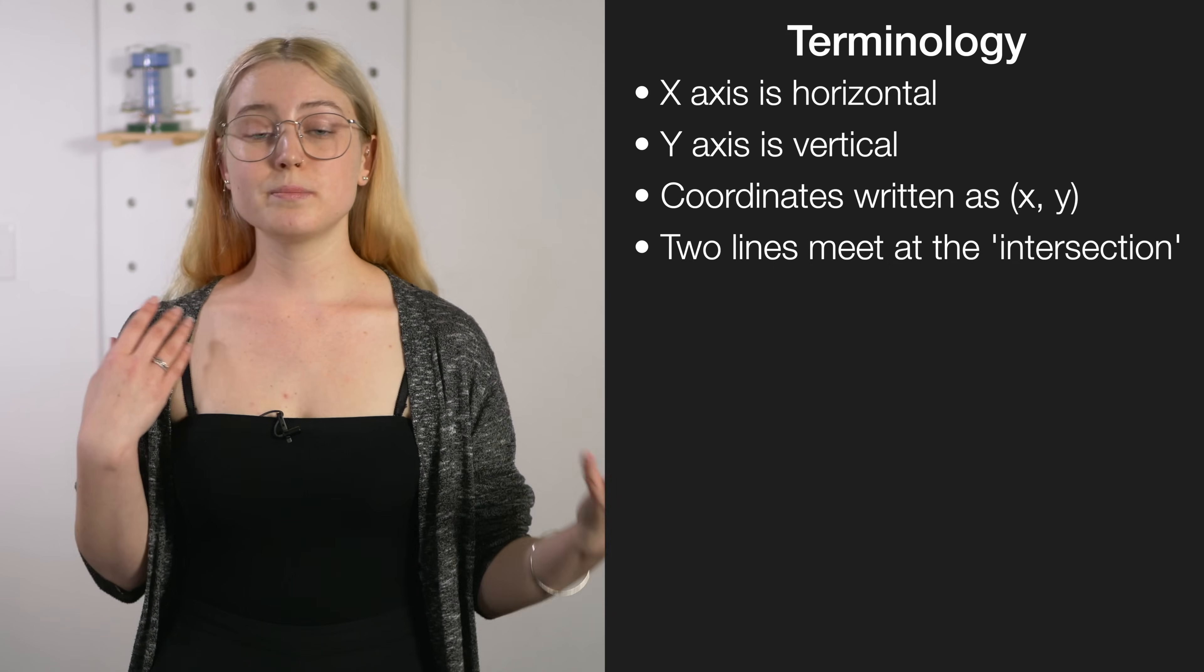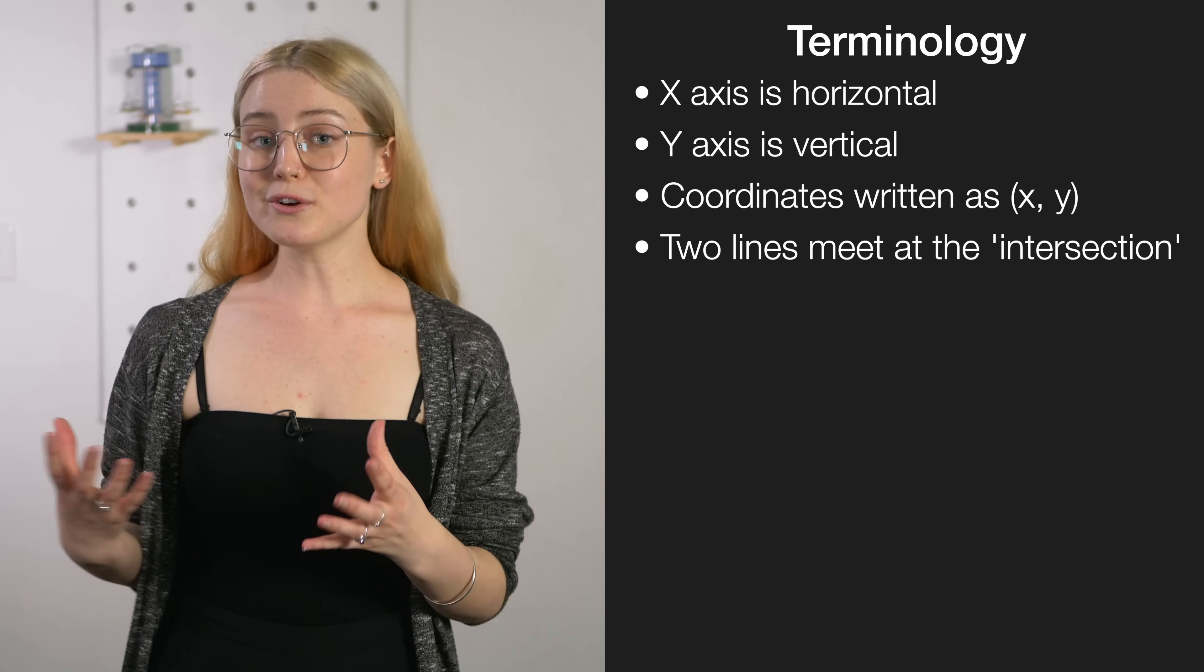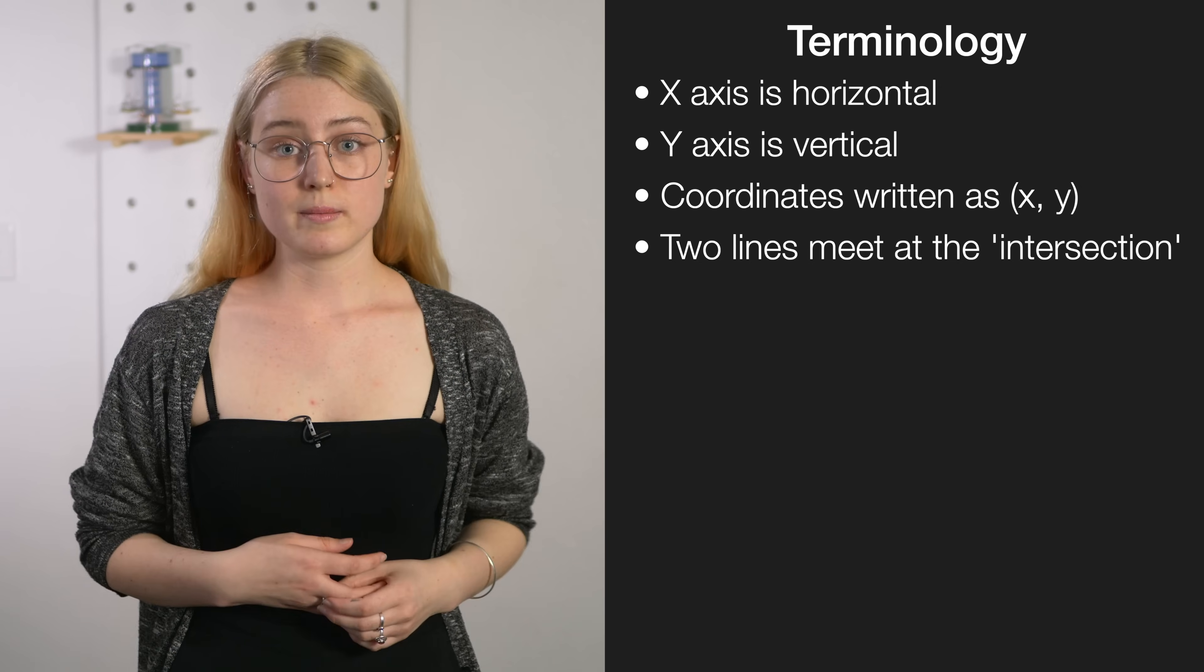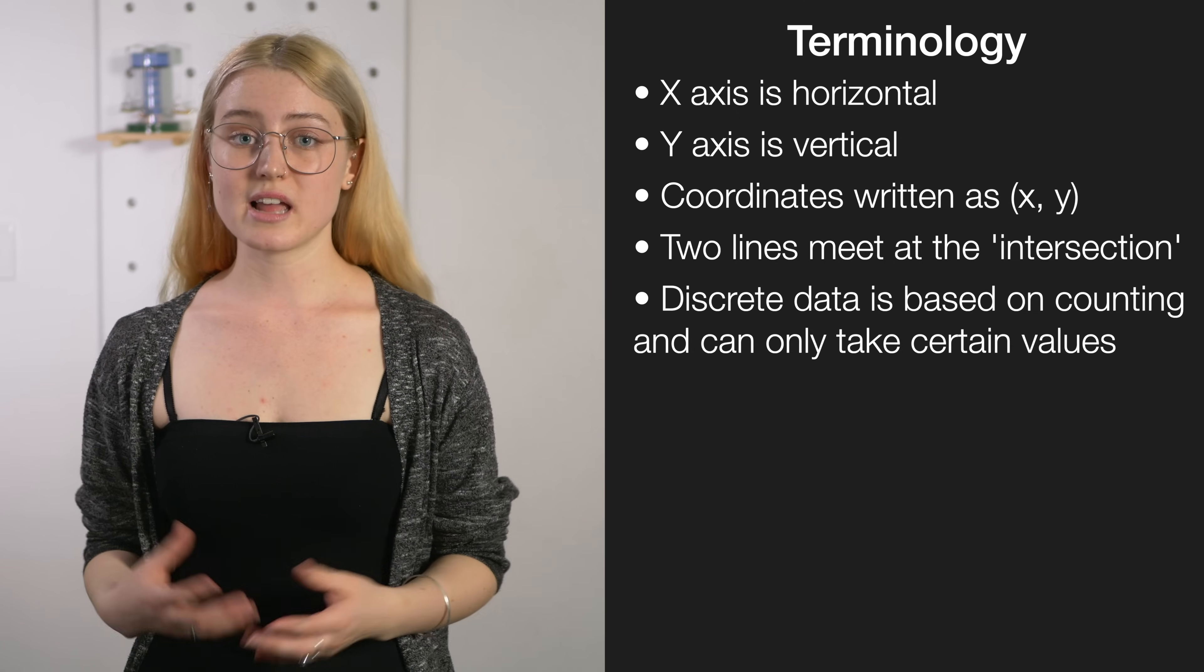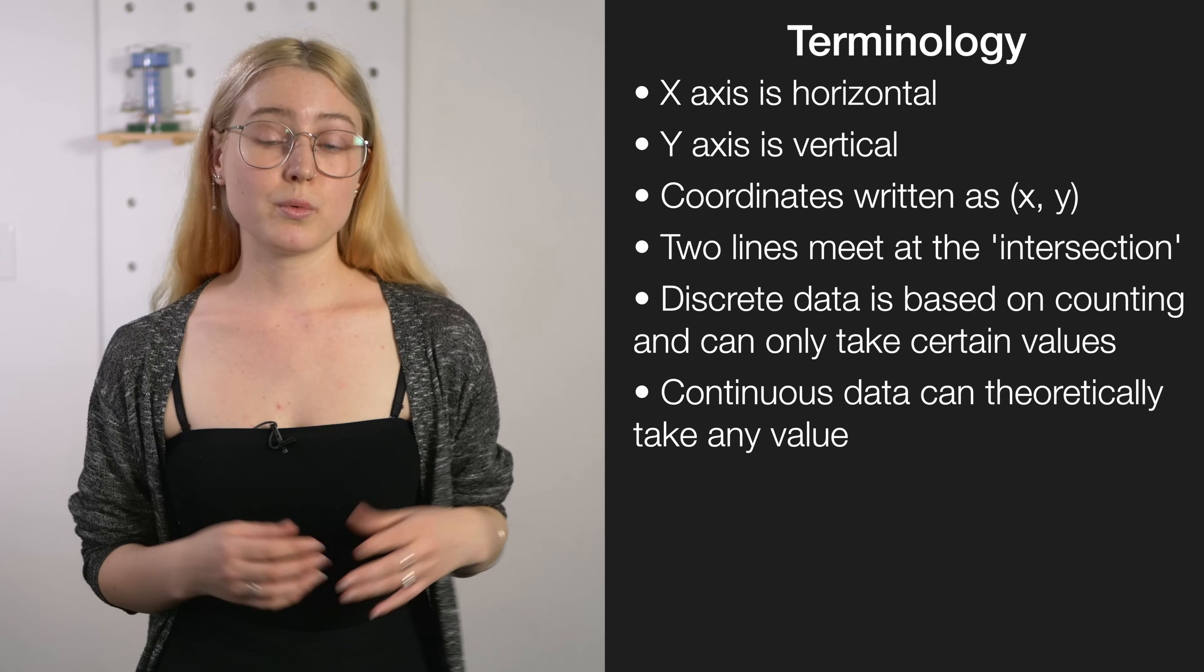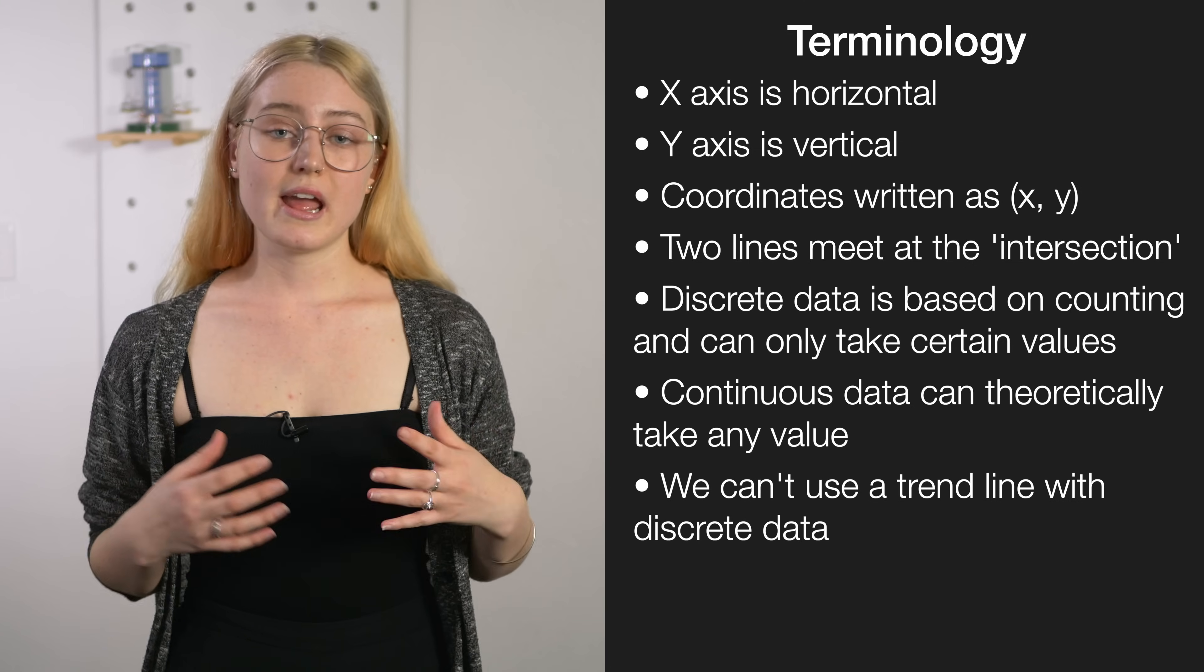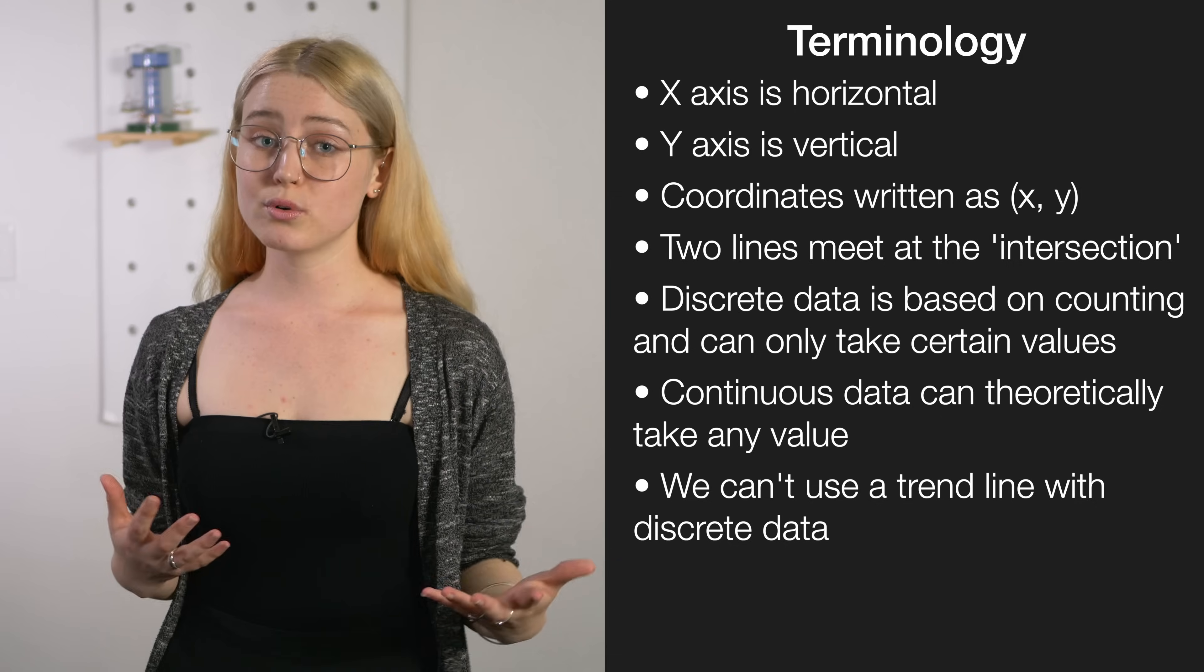And you also want to be aware of things like the y-intercept and the x-intercepts. Now I say plural there because the x-intercepts is where you'll likely be discussing parabolic relationships. Now analyzing different kinds of data is also really important. So we've got discrete and continuous where discrete is a given set of numbers like the amount of children in a room versus continuous where it could be theoretically any number on a spectrum like something like height. So in discrete data we can't use a trend line and this is because the data isn't appropriate for this. Whereas we can with continuous. It's important to bear this in mind.